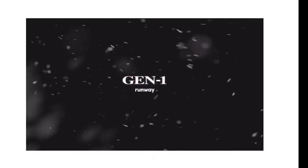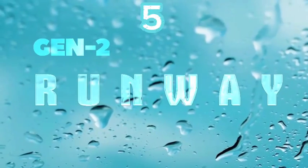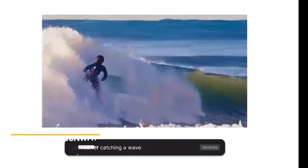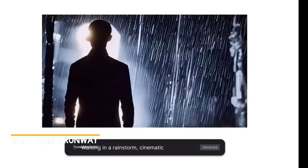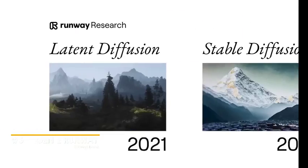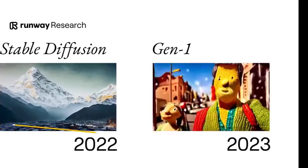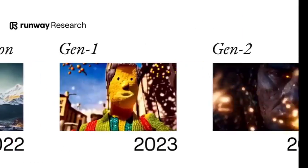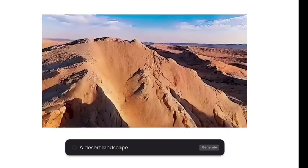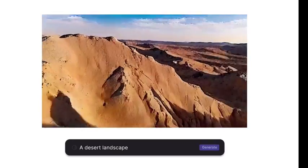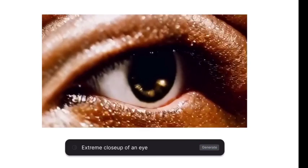Finally, shortly after we saw Gen 1, Runway released Gen 2. Gen 2 is an AI-powered video editing tool that allows you to synthesize new videos from text or images. With Gen 2, you can apply the style and composition of an image or text prompt to a source video, creating a new video that incorporates those elements. You can also create entirely new videos using only words as input.